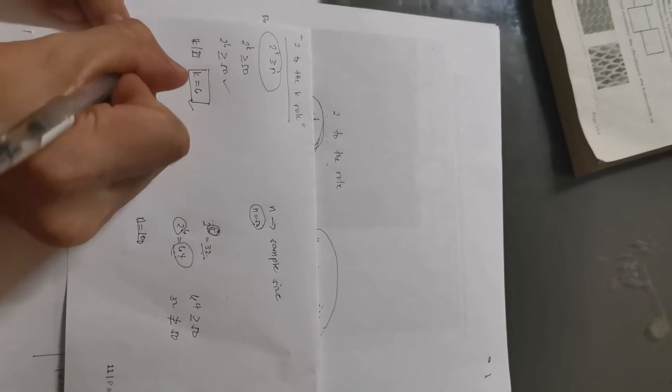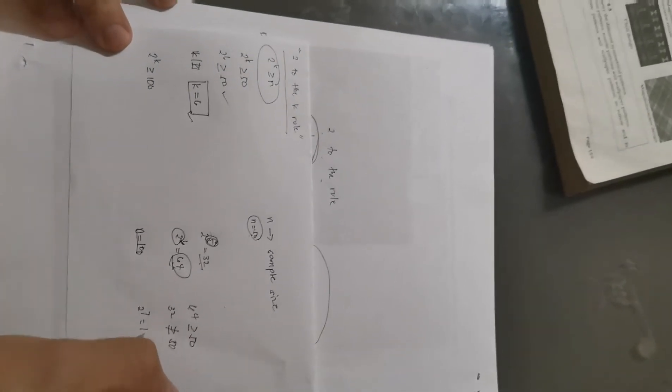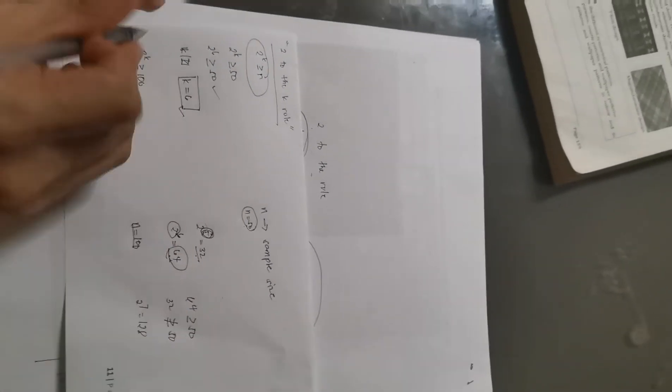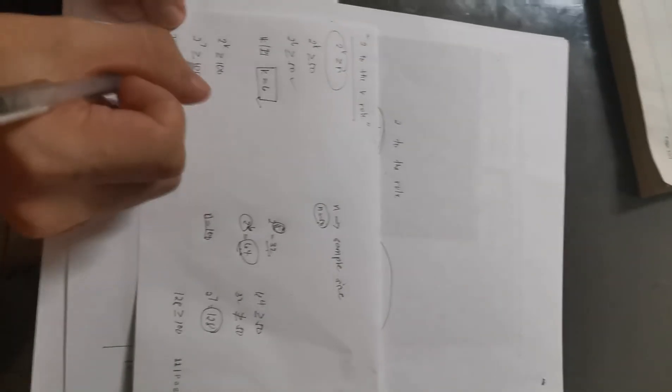For another example applying the method: what if n equals 100? Your sample size is now 100. Applying the rule, 2 raised to k must be greater than or equal to 100. After k = 6, which gives 64, we try 2 raised to 7, which is 128. Since 128 is greater than or equal to 100, we have k = 7. So if your sample size is 100, 7 classes is enough.